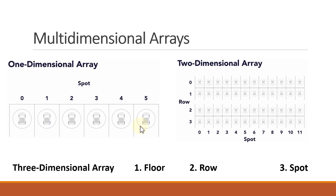We can also discuss the three-dimensional array, which you can think of as a multi-floor parking building. Here you need three different kinds of information: first, at what floor you have parked your car; second, at what row; and third, at what spot. Beyond three dimensions it could be hard to imagine, so let's go to LabVIEW and see how it works.